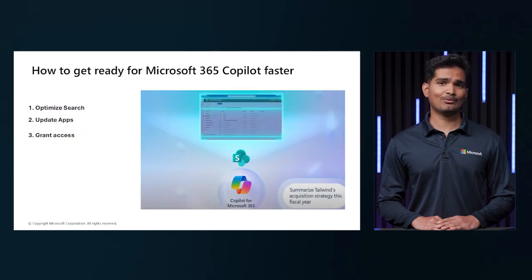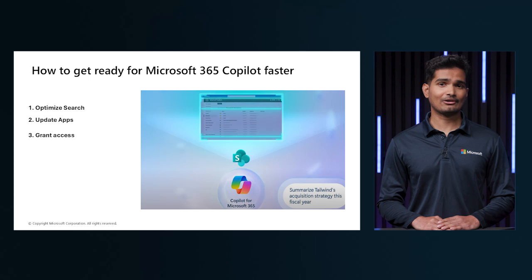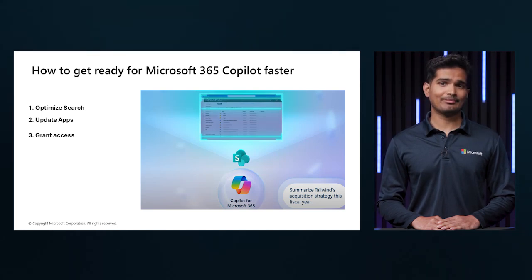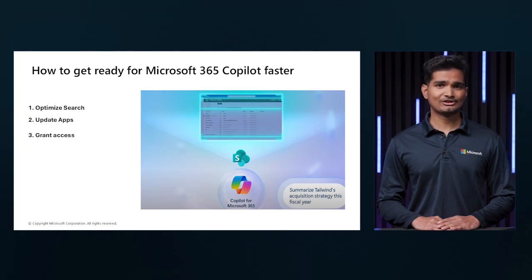How should one get ready for Microsoft 365 Copilot faster? Some steps to consider: optimize search — use the restricted SharePoint search feature to define and limit the sites from which Copilot can retrieve data. This ensures that only approved organizational information is accessible while sensitive data remains protected. Update apps — ensure that Microsoft 365 apps on desktop and mobile devices are running on supported update channels, for example monthly enterprise channel, current channel, or current channel preview.